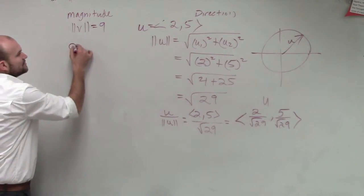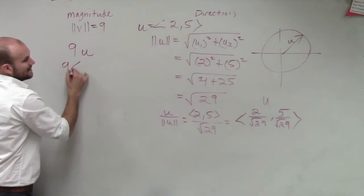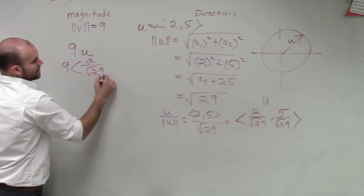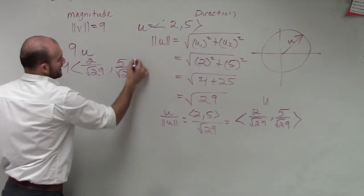all I need to do is multiply by 9 times my unit vector u. So it's going to be 9 × (2/√29, 5/√29).